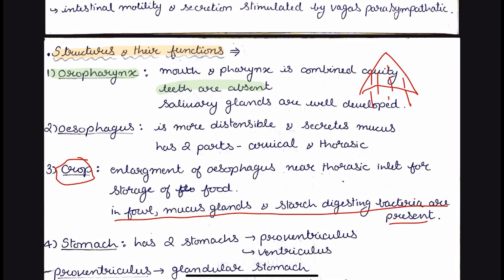What is the function of the crop? The function of the crop is the storage of food before it reaches the stomach. In case of fowl, because they have a very grain and starch-heavy diet, starch-digesting bacteria are present in the crop. But in case of ducks, the crop is absent, so the retention of food in the digestive tract of ducks is very less.